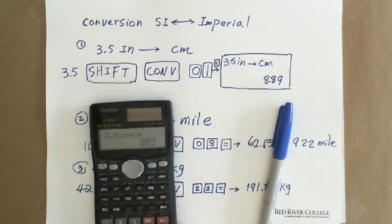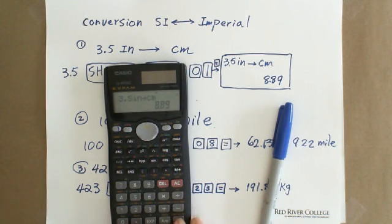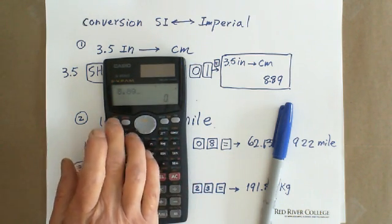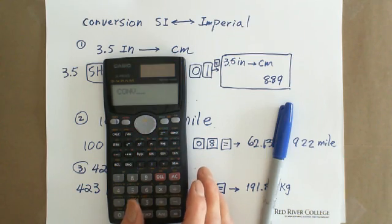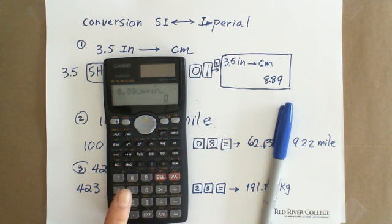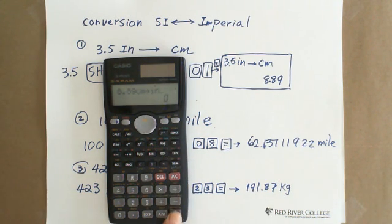If you want to change it back, for example, if you have 8.89, which is centimeter. Then you go to shift, conversion. From inch to centimeter is 01. From centimeter to inch is 02. Code number 02. And it shows you 8.89 centimeter to inch. Hit equal sign. It gives you 3.5 inches. So that's why in this calculator, they have 20 different pairs of conversion between SI unit and Imperial unit.